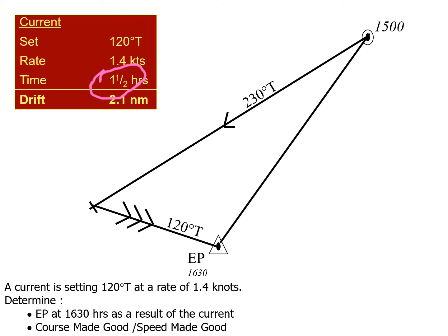From the triangle (estimated position), join back to the 1500 position — that gives you the course made good and the speed made good for the last one and a half hours. The course made good in this case becomes 216 degrees true. So although you intended to steer 230 degrees true, because of the current your vessel actually made good a course of 216 degrees. The course to steer is denoted by a single arrow and the course made good by double arrows.